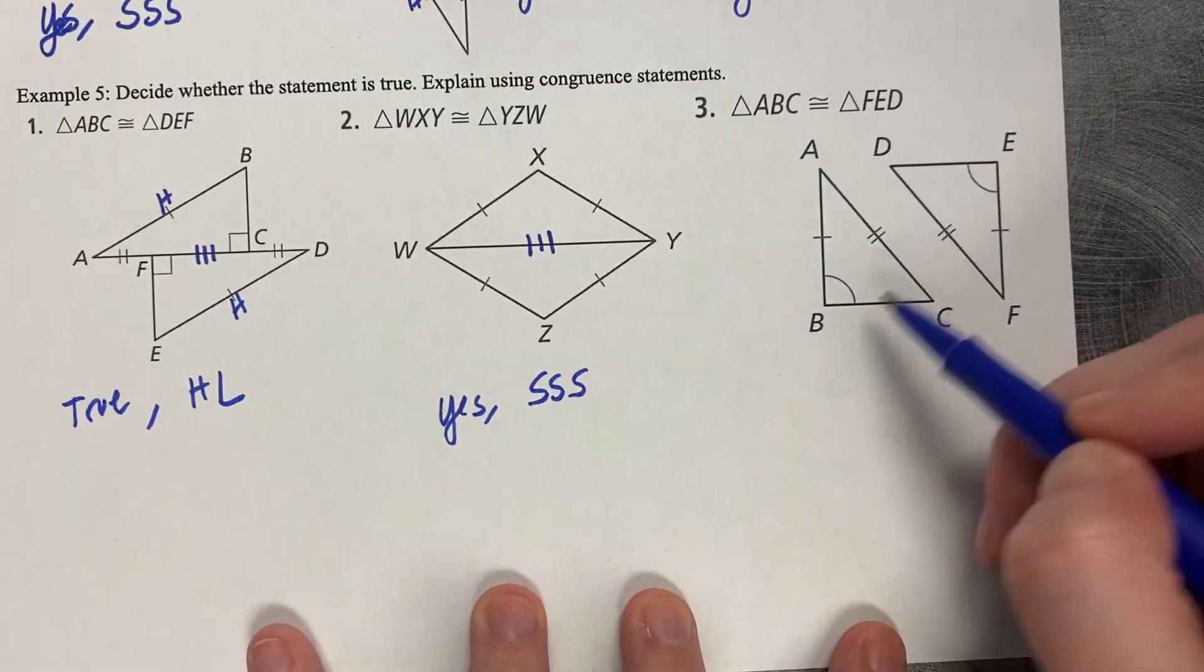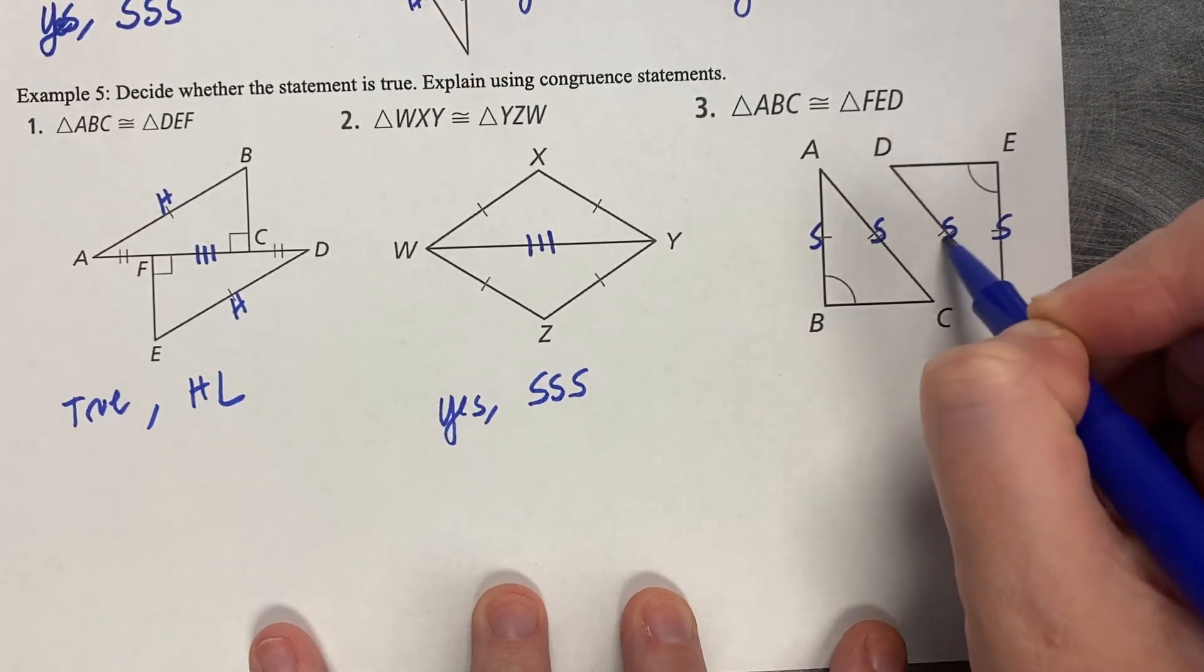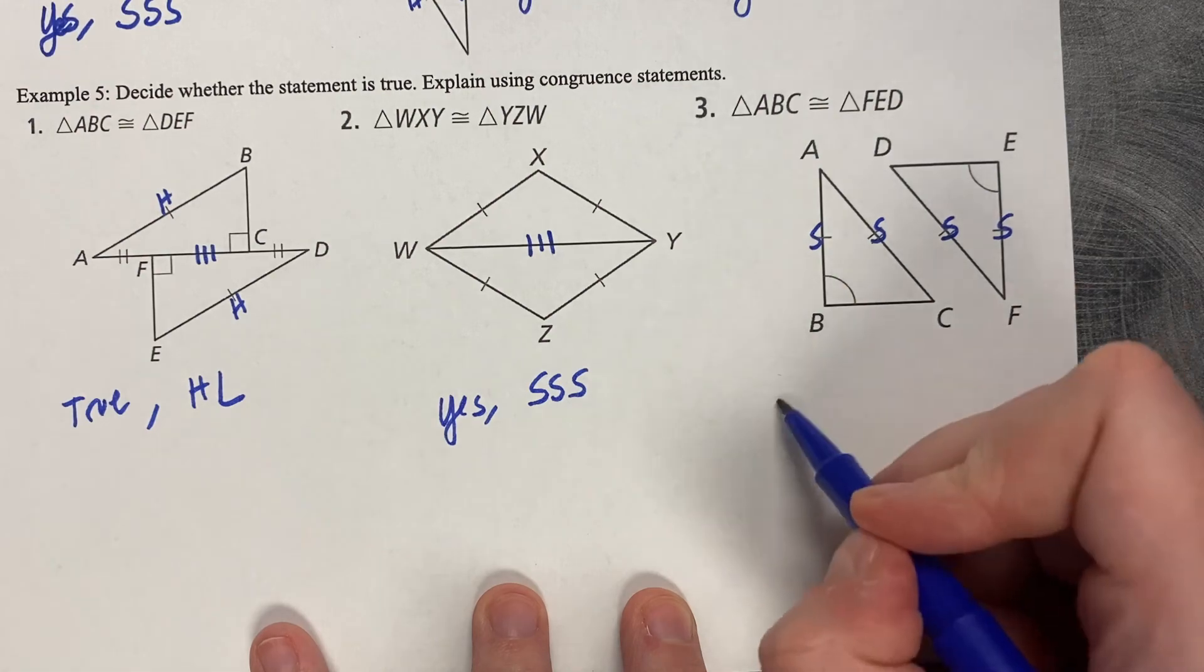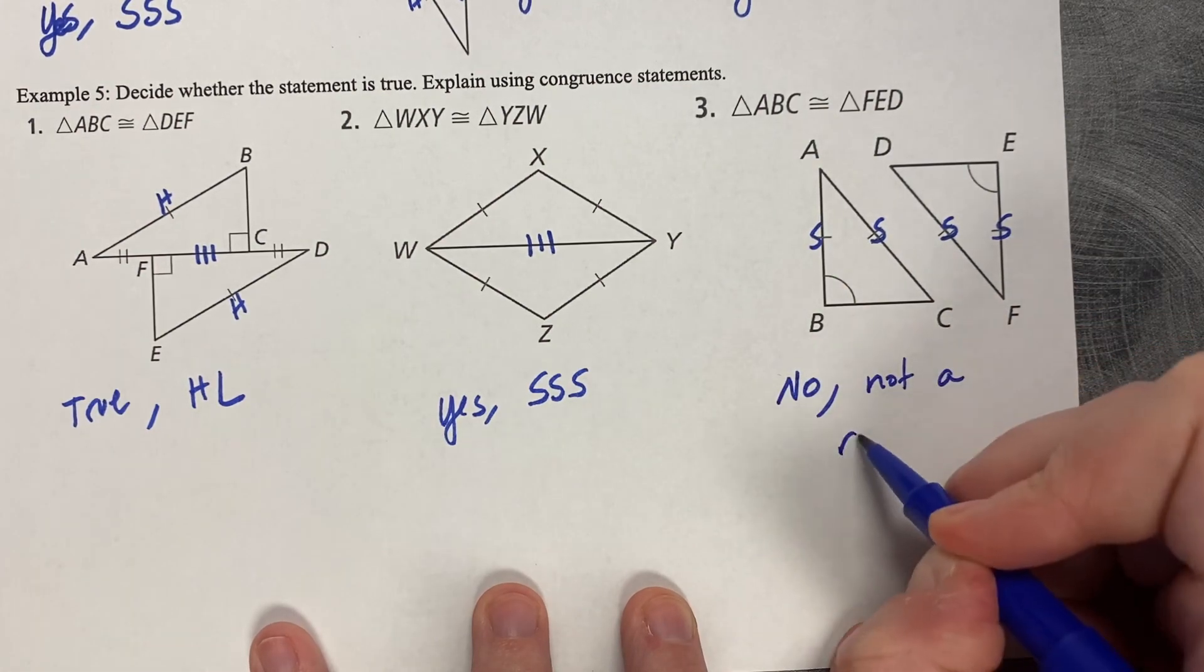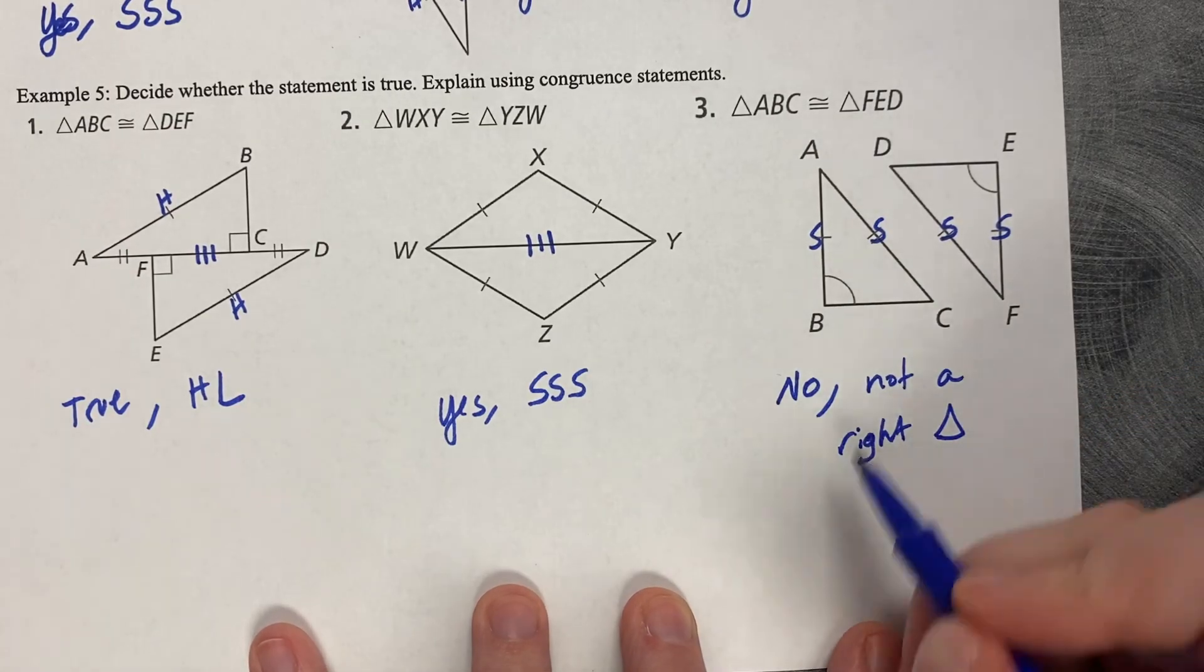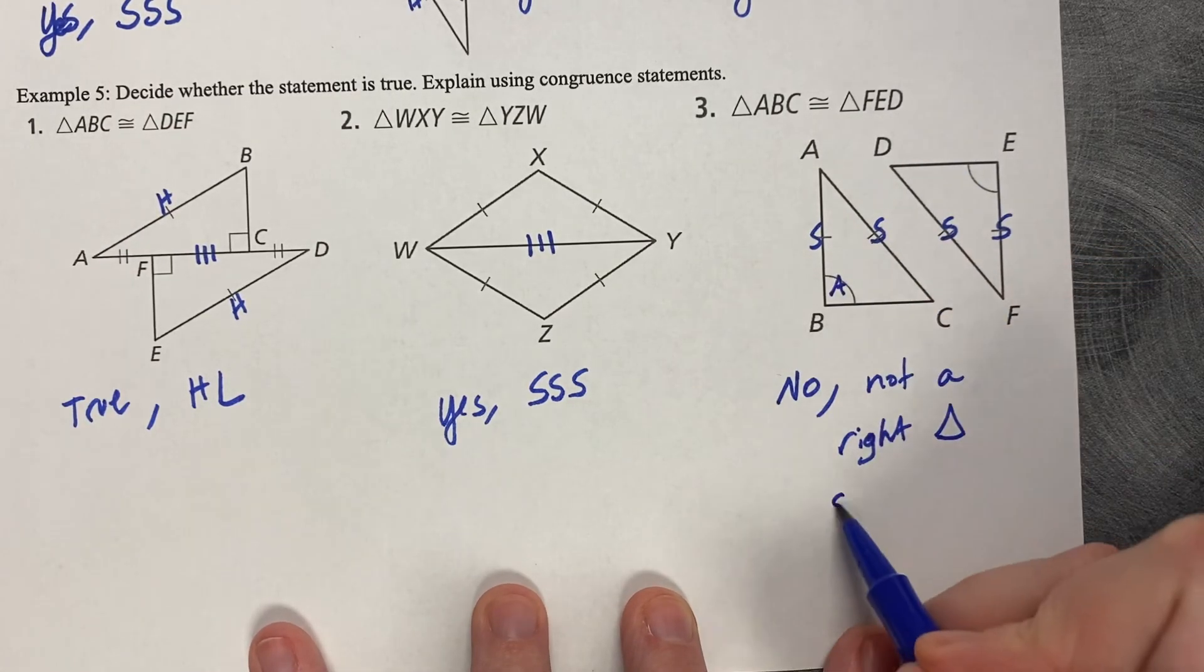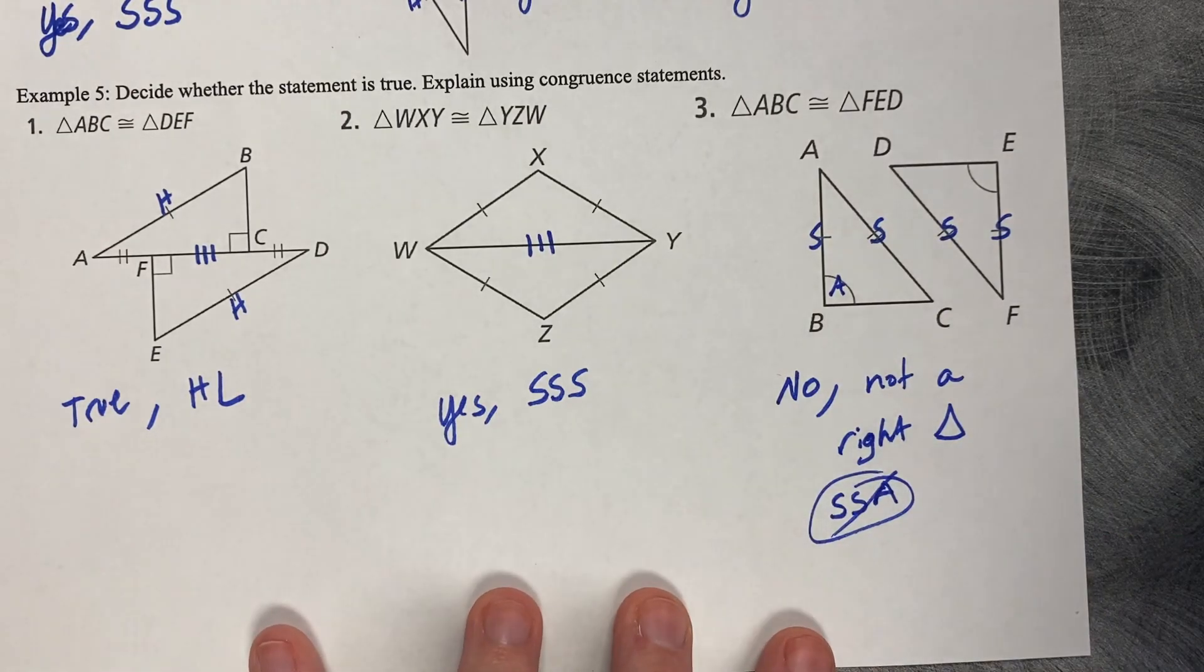This last one: not 90-degree angles, and all I have is a side and a side and a side and a side. That's not enough. This is no, because it's not a right triangle. It would be SSA, which is not a congruence theorem. Thank you.